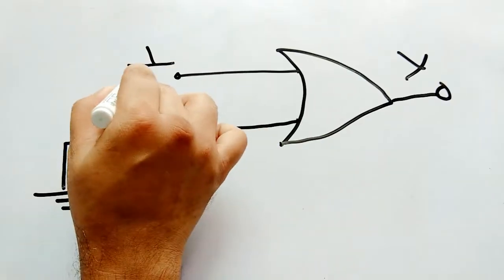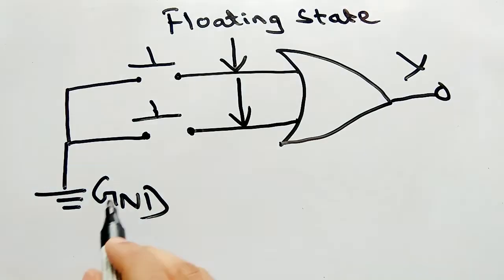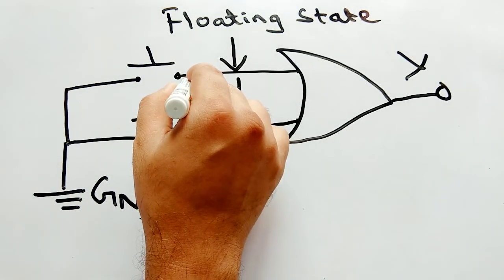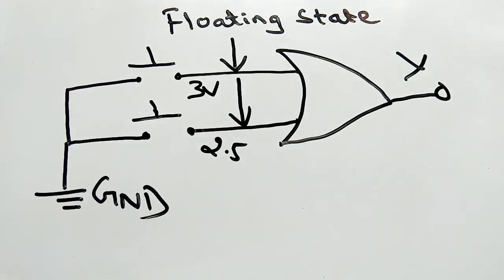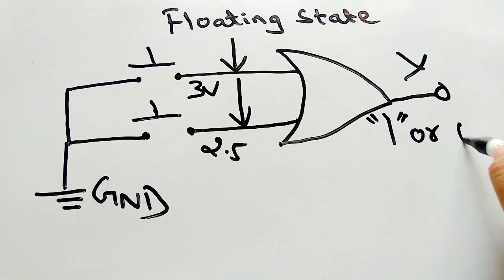Consider this example using an OR gate. Here, when the switch is not pressed, the input pins are in floating state and EM waves from our surroundings can induce voltage. Let's say they induce 3 volts and 2.5 volts in the pins. This will push the entire circuit into undecided state.